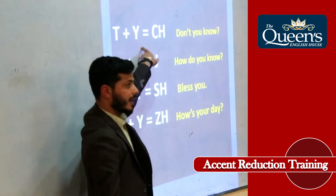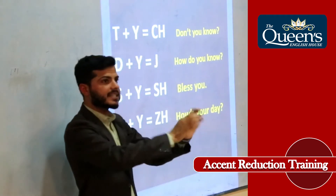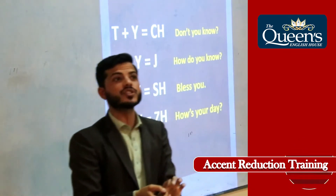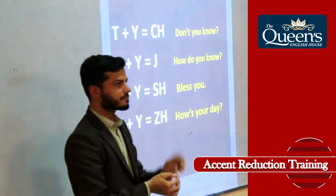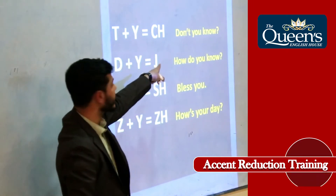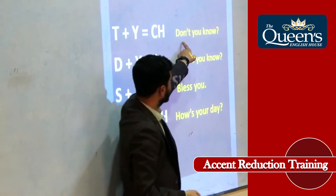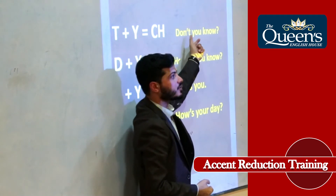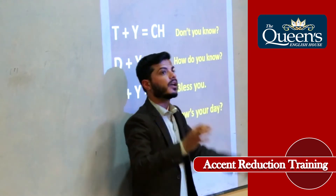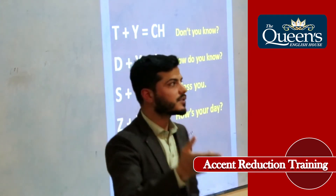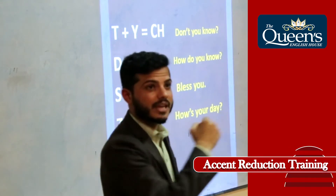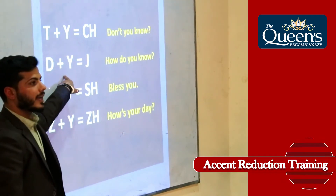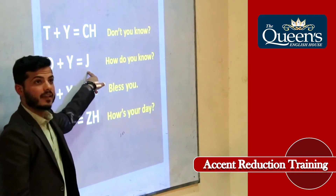What happens when T and Y get together? They are fused and they change into a 'ch' sound. For example, the word 'don't' ends with T, and 'you' starts with Y — so 'don't you' becomes 'don'tchu.' D plus Y together will change into a J sound.